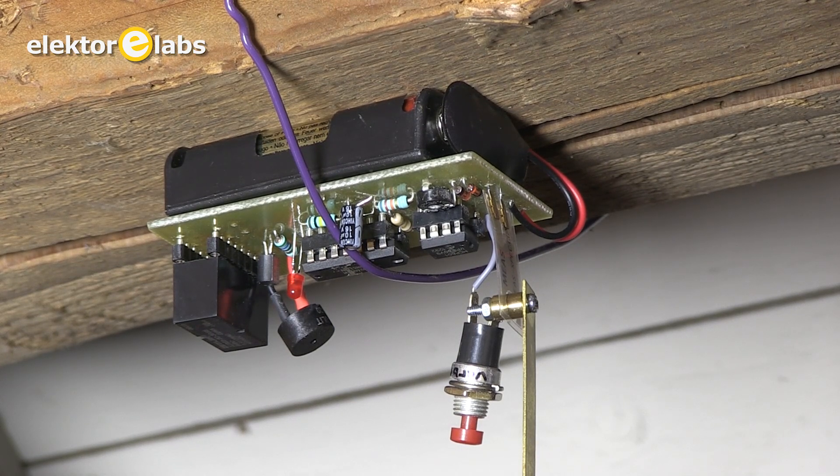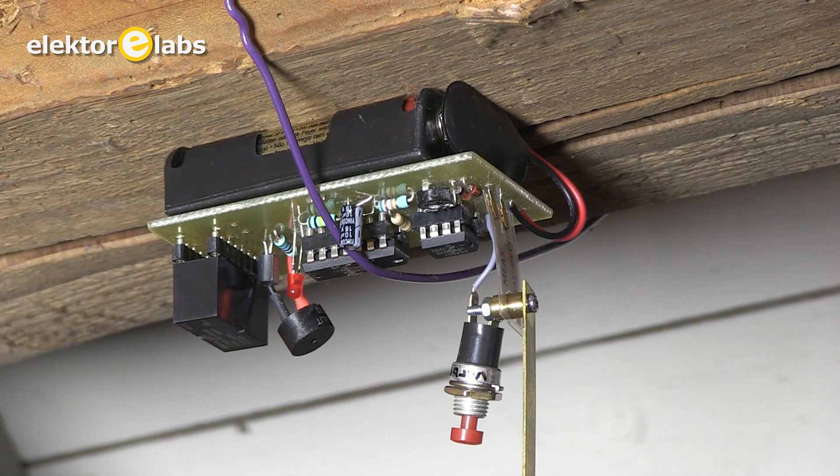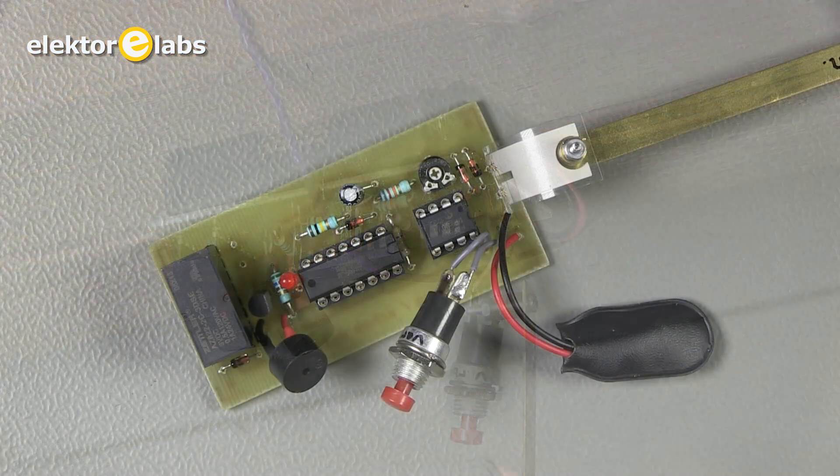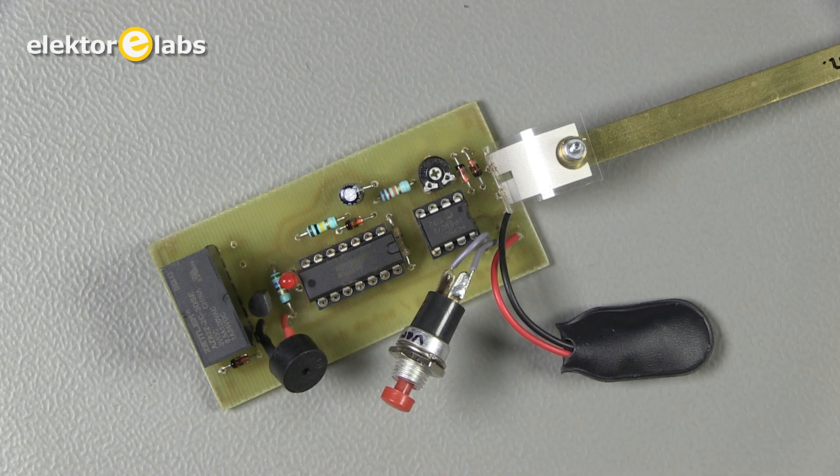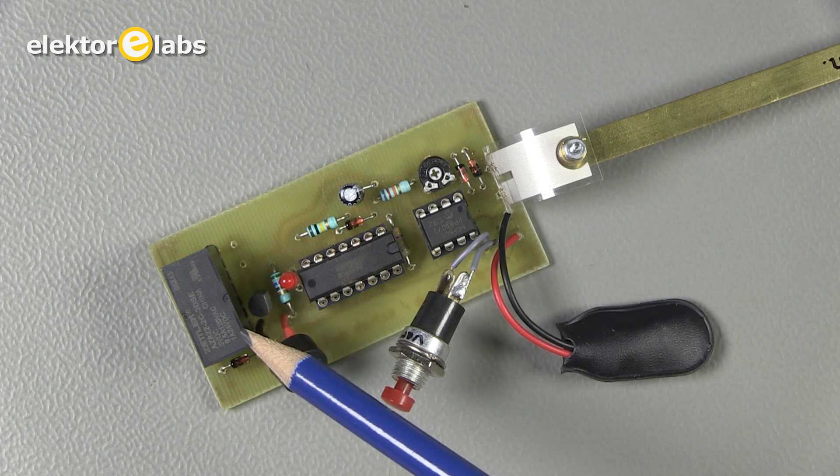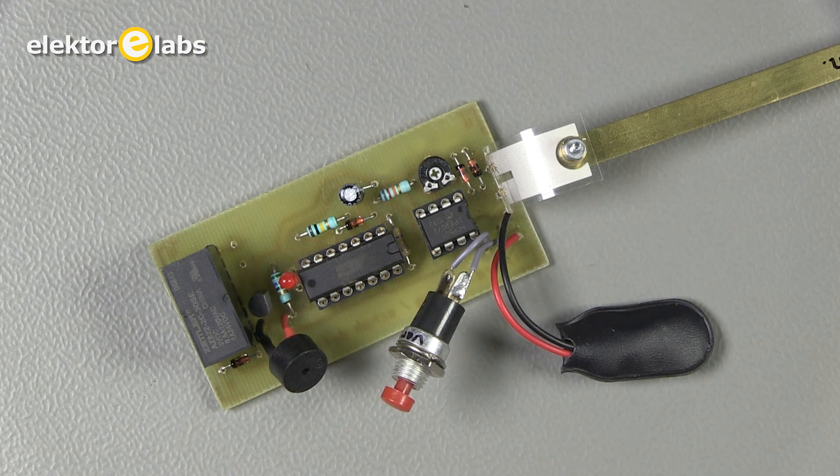The sensitivity is adjustable to allow the detector to be used under various conditions. Along with an LED and a buzzer for the visible and audible indications, there is a relay that can be used to energize other circuits or devices.